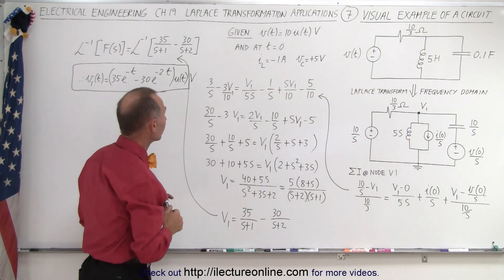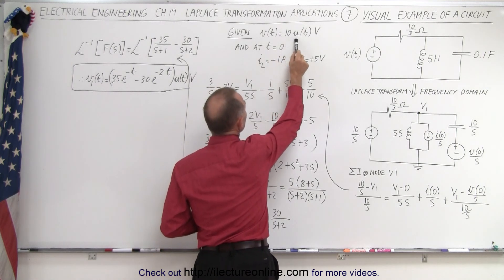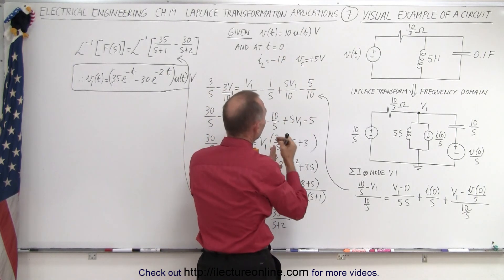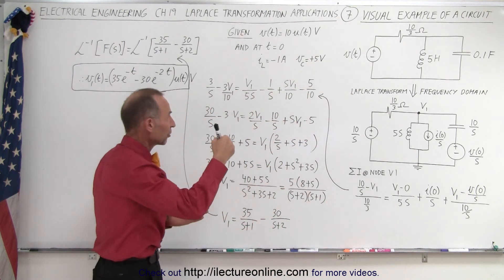There are some initial conditions given as well. The voltage supply is equal to 10U(t) volts. That means that at time equals zero, the voltage goes up to 10 volts, and that is a step function.